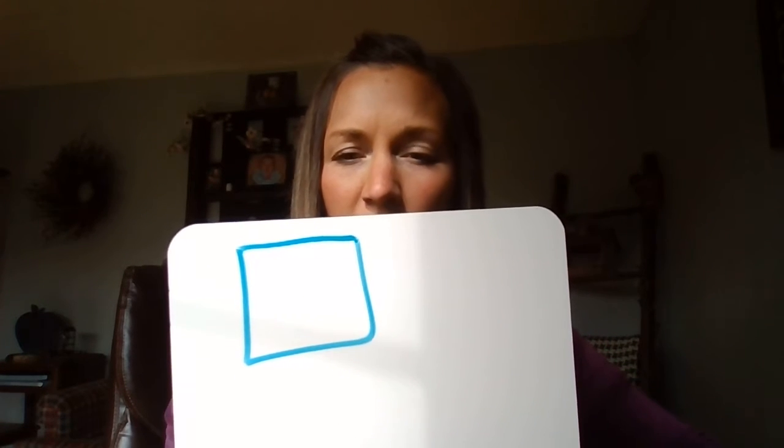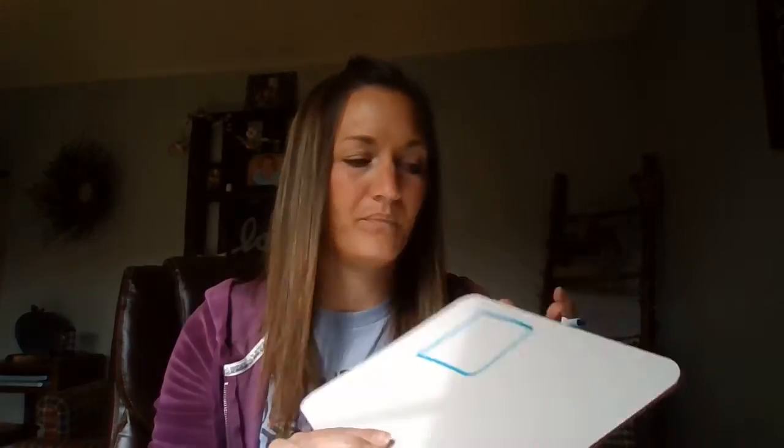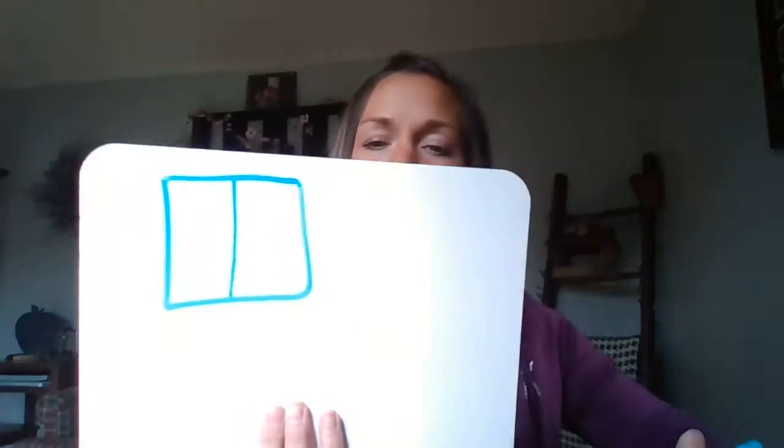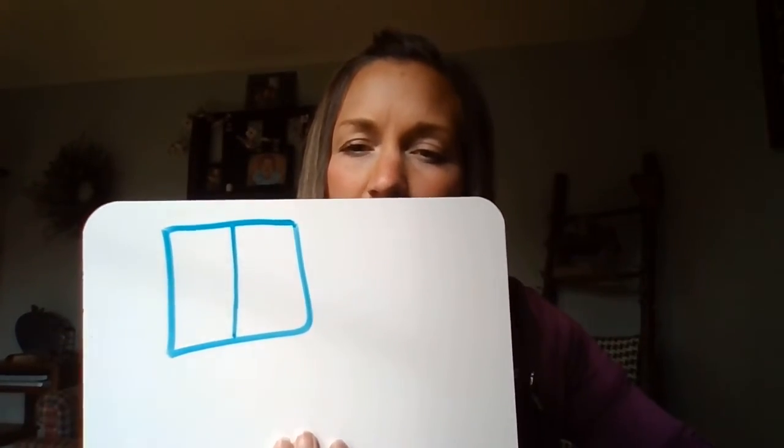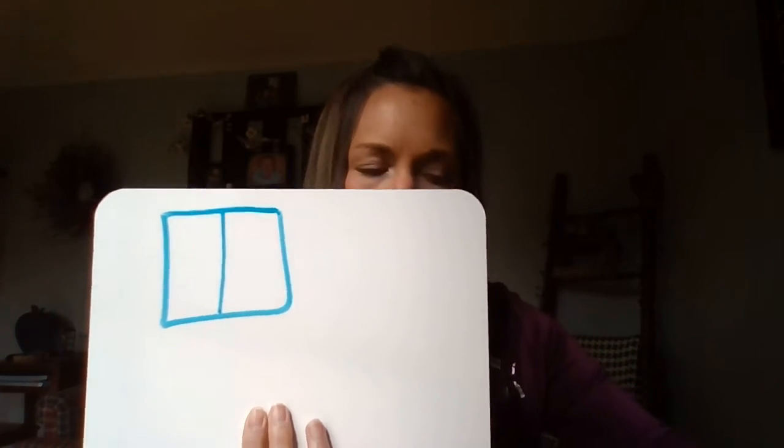Now it says to make it into two equal parts. So we want to make it equal. So I'm going to just draw a line down the middle like that. Now I have two equal parts. Now they want us to name one part. If I'm going to name one part, I could say one half, but with just words.